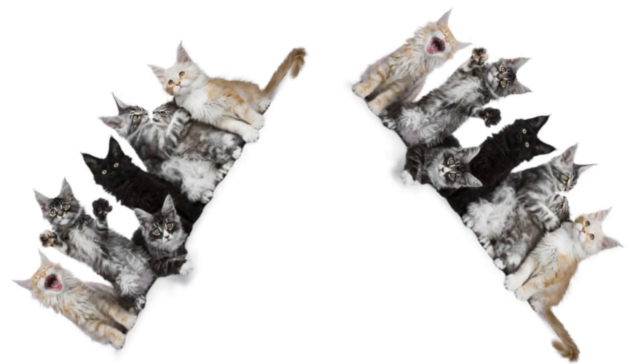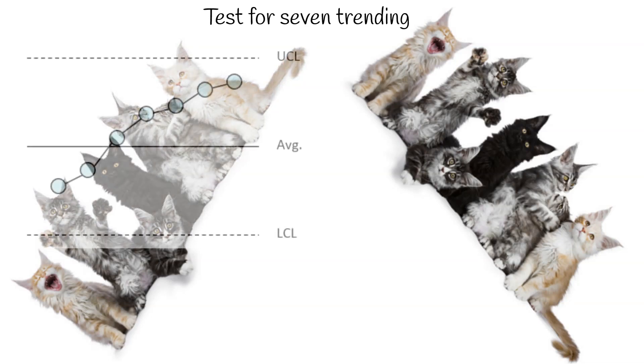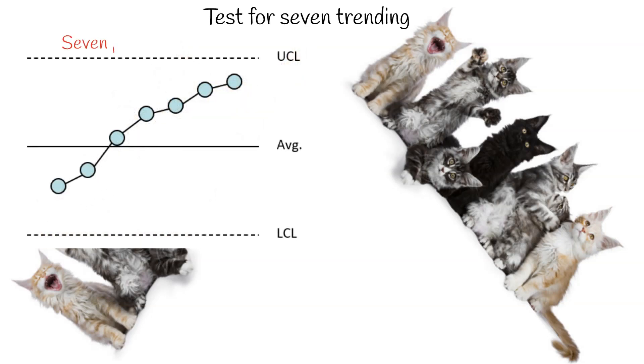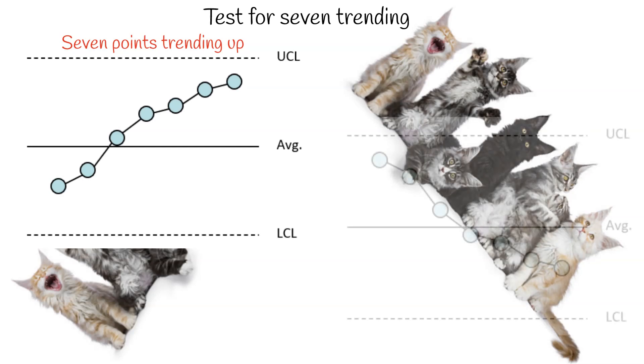And finally, we have a simple test called the rule of seven test, which is for trending. If you have seven points in a row trending up, you have a special cause of variation.